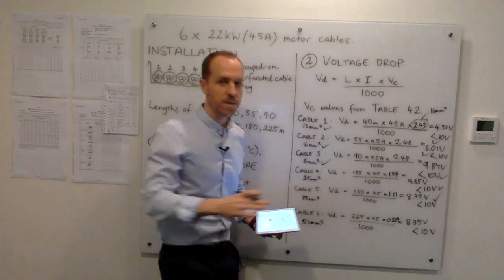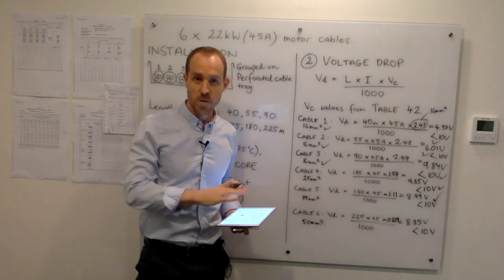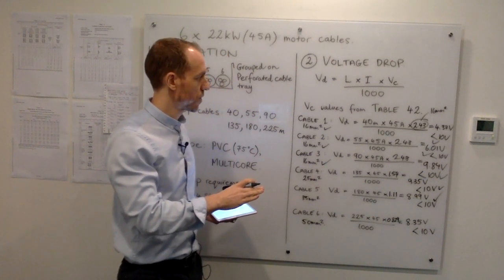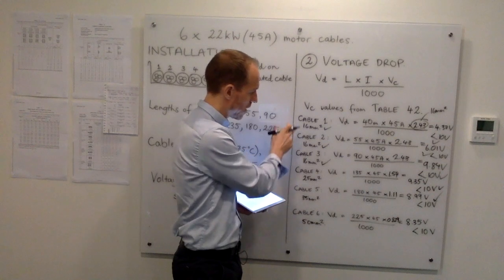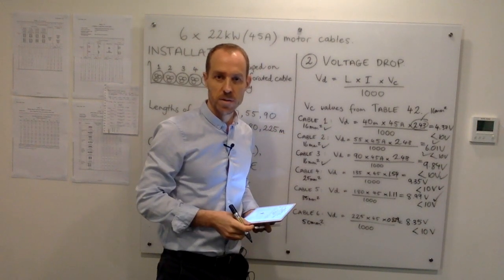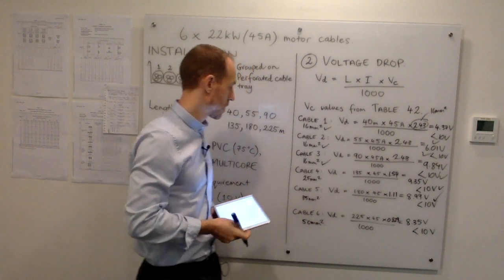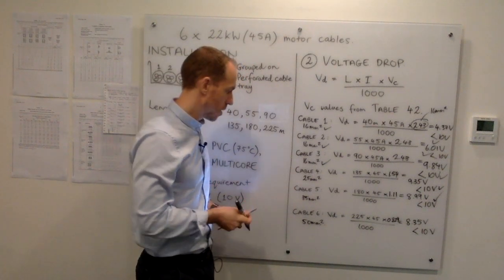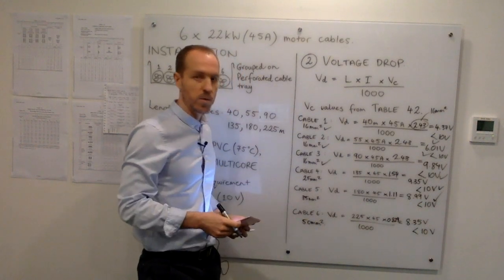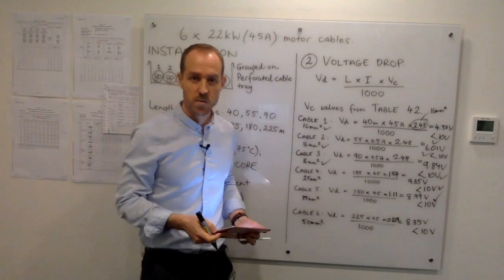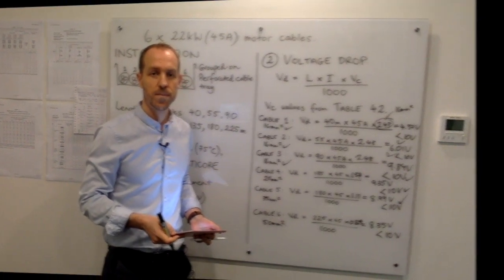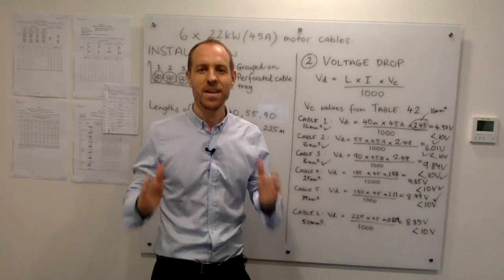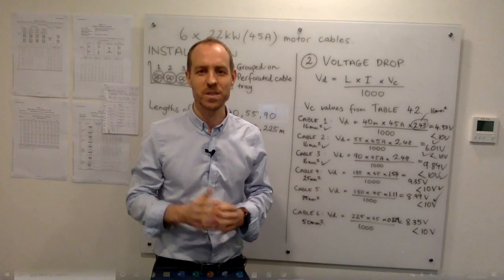8.35 volts is less than our 10 volt voltage drop requirement, so we need at least a 50mm² cable for cable 6. In summary: cables 1, 2, and 3 use 16mm²; cable 4 needs 25mm²; cable 5 needs 35mm²; and cable 6 needs at least 50mm² due to voltage drop. Now I'm going to show you how to do the same thing using software.